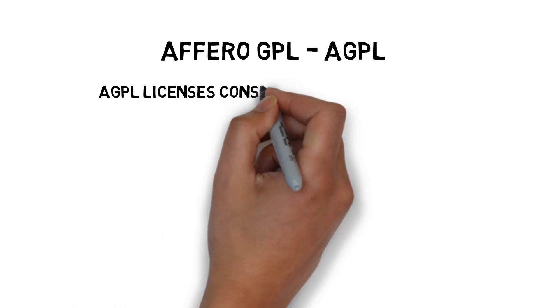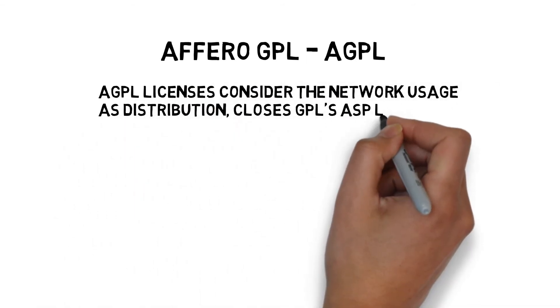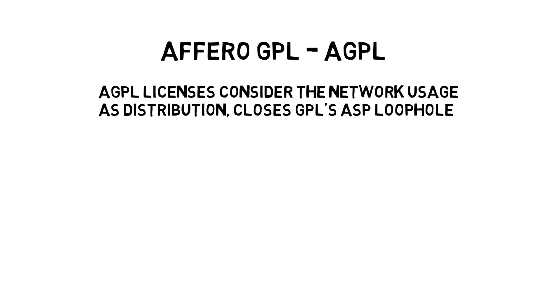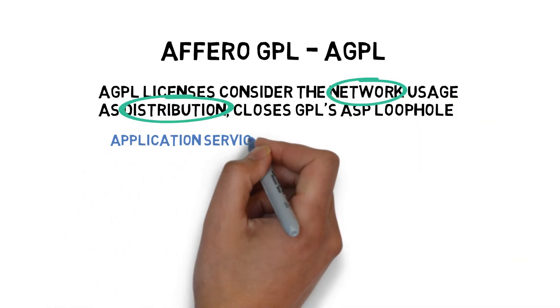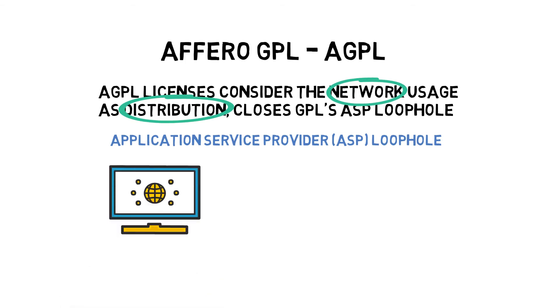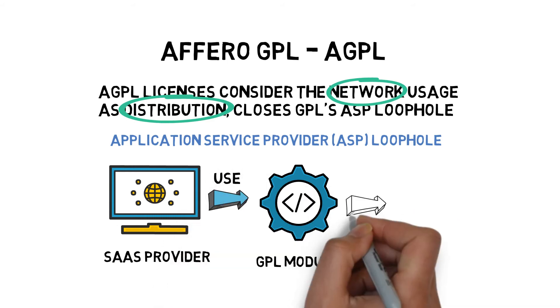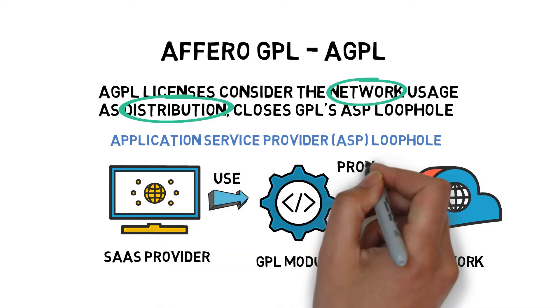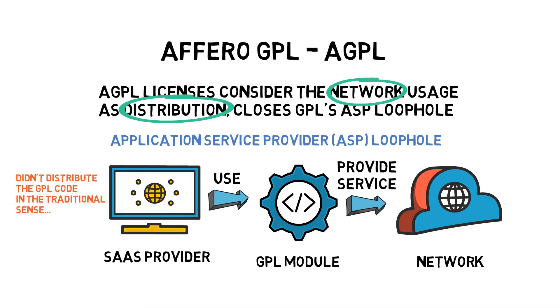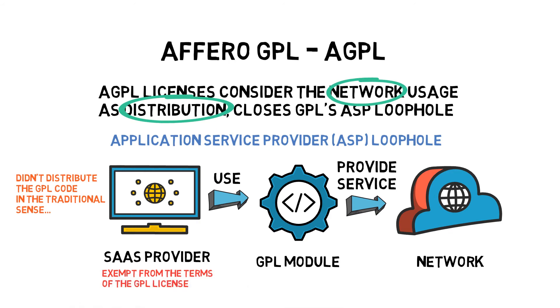The Afero GPL, also called AGPL, is very similar to the original GPL. The only difference between GPL and AGPL is that AGPL considers network usage as distribution, which closes the famous GPL loophole called the Application Service Provider Loophole. Due to this loophole, software-as-a-service providers — since they didn't technically distribute the GPL code in the traditional sense — could legally run that code over a network to make money while being exempt from the terms of the GPL license. AGPL closes this loophole by defining network usage as distribution as well.